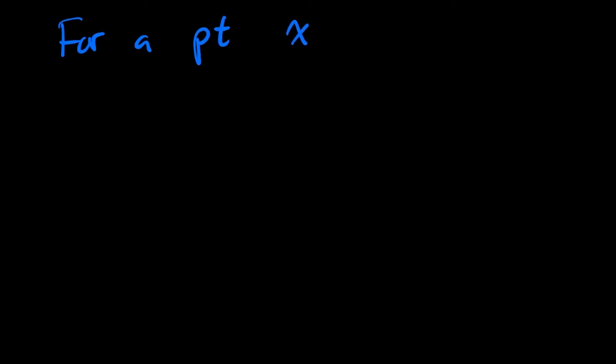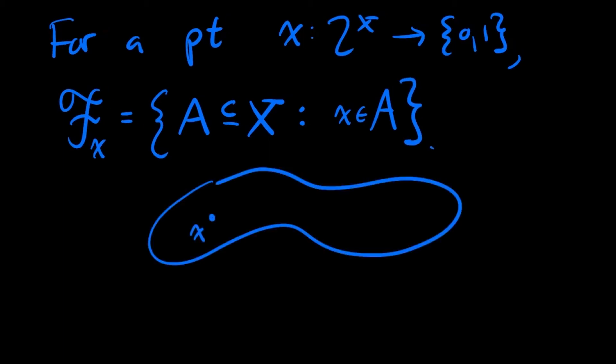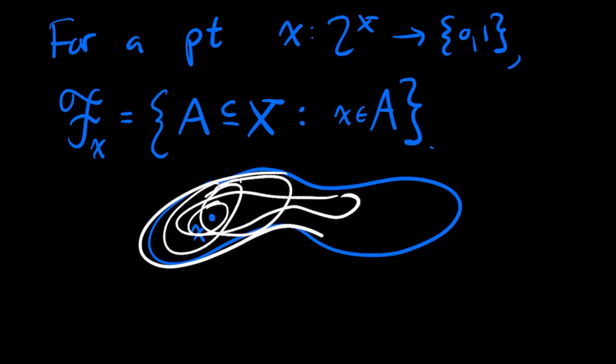And then what is this collection of sets in the case, for example, that you're looking at a point, little x, in your space? Well, you view little x as a map from the one point set into your space, and then you look at the collection of all subsets whose pre-image includes that point. That's exactly just the subsets of X, the subsets of your space, that contain the point little x. And that makes sense. What else could it be? I give you a point in my space and I have to find a collection of subsets. It's just the collection of sets that contain that point.